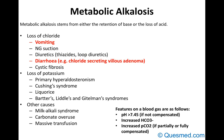Metabolic alkalosis is usually related to retention of a base or loss of an acid. Common scenarios include vomiting and diarrhea — you lose chlorides and can cause a metabolic alkalosis — and diuretics. Features on a blood gas include increased pH above 7.45, increased bicarbonate, and possibly increased PCO2 if partially or fully compensated. Metabolic alkalosis is much less common than acidosis.